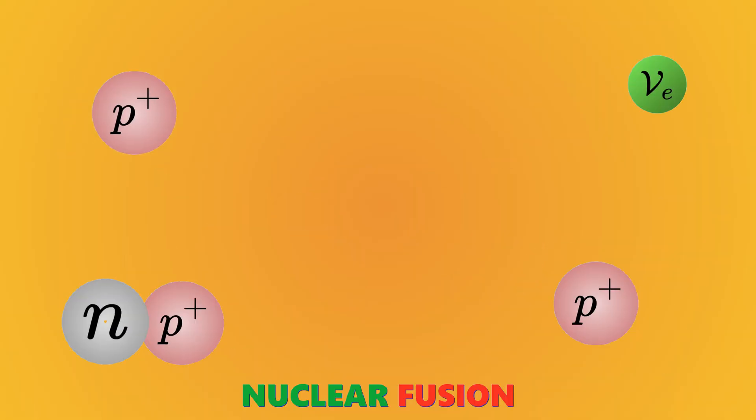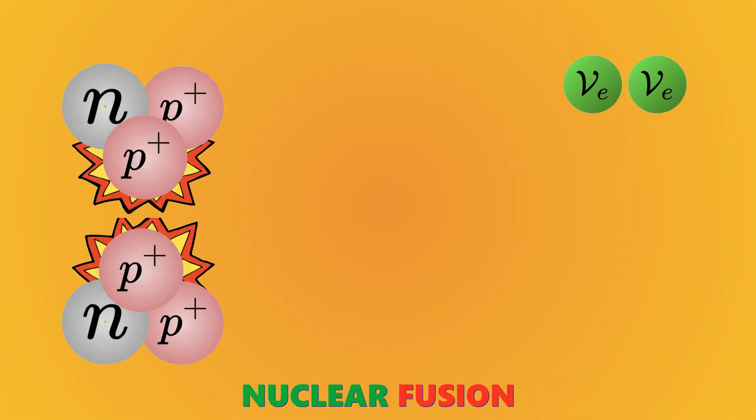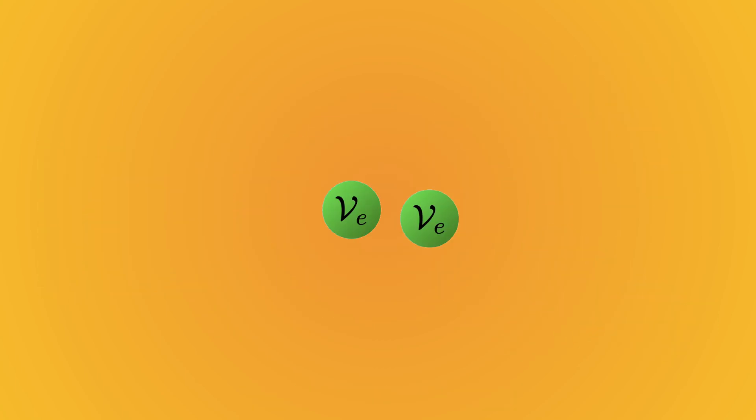Where do these neutrinos come from? They actually come from the sun. Our sun does nuclear fusion to produce heat and light. During this process, the sun releases electron neutrinos.